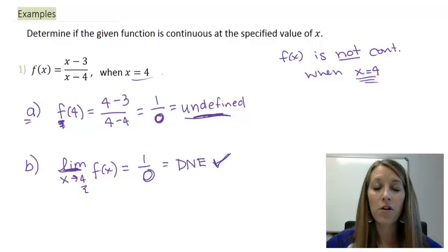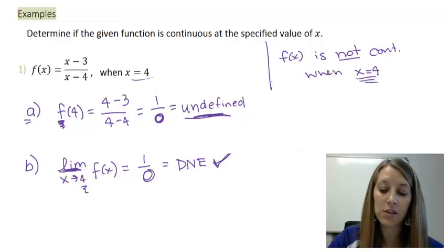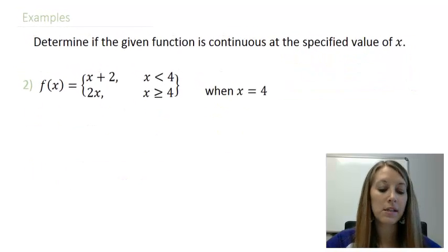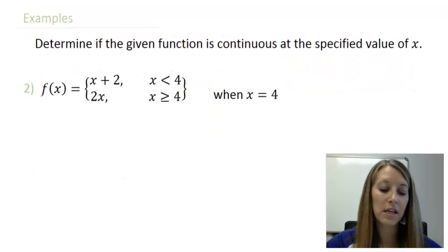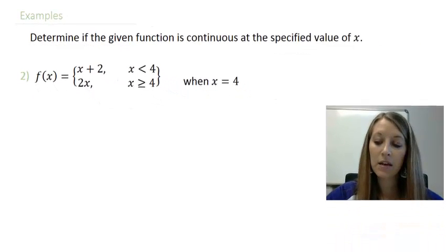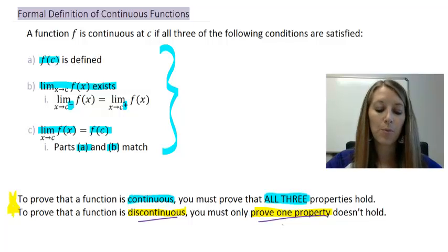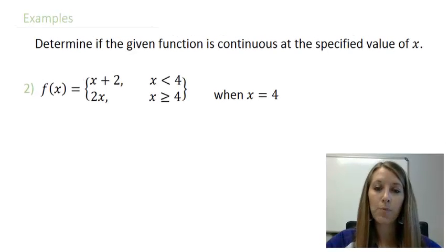We over-proved that one — remember, to prove discontinuity we only need to show one property doesn't hold. Let's move on to a second example: the piecewise function f(x) = x+2 when x < 4, and 2x when x ≥ 4. To prove it's discontinuous we need just one property to fail; to prove continuity we need all three to hold.